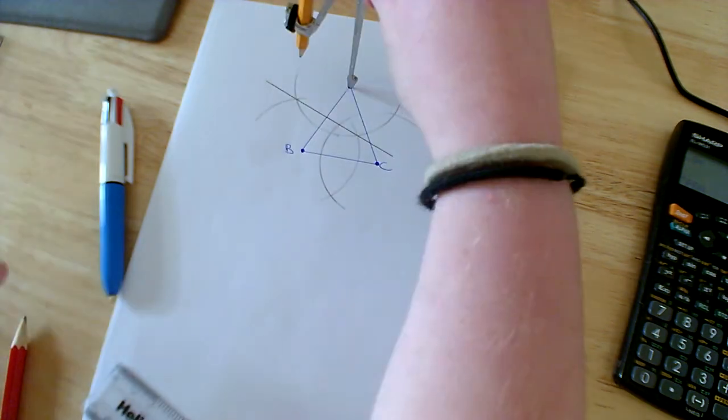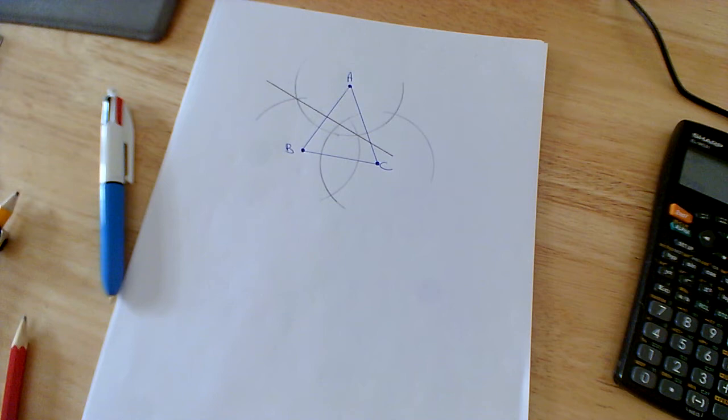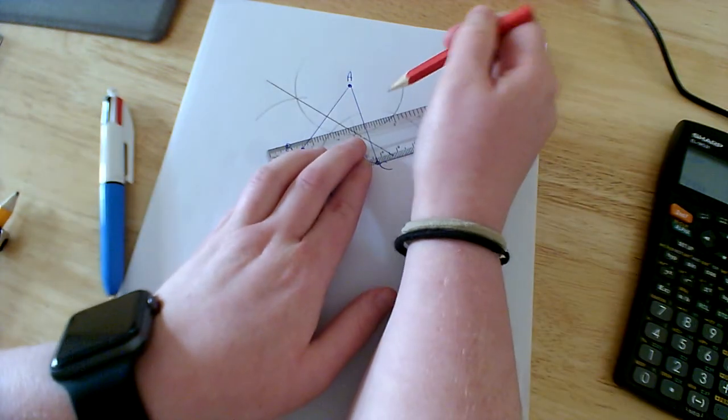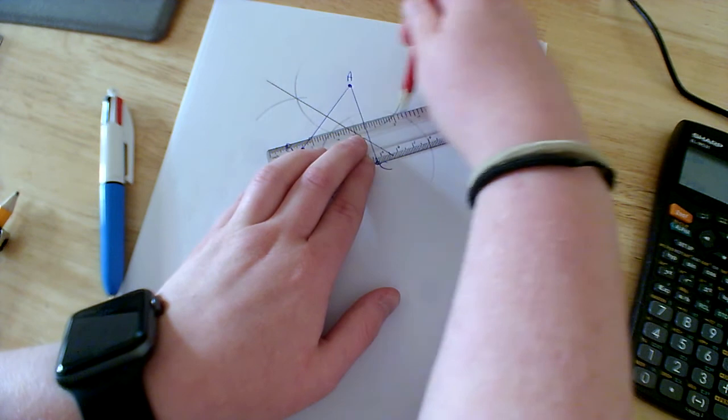So this is where it's after intersecting. This here is now going to be my perpendicular bisector of AC.